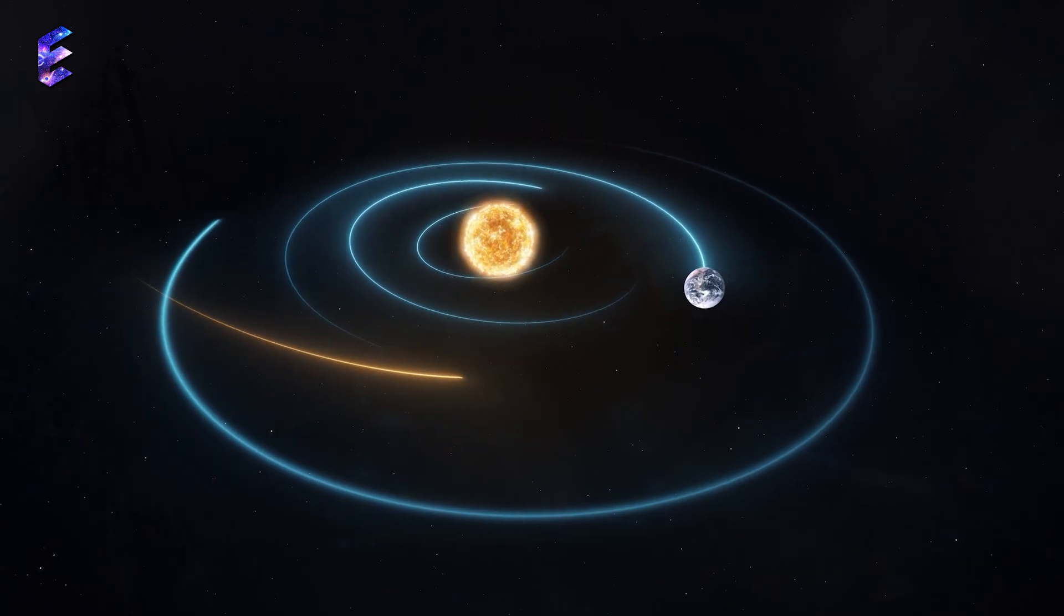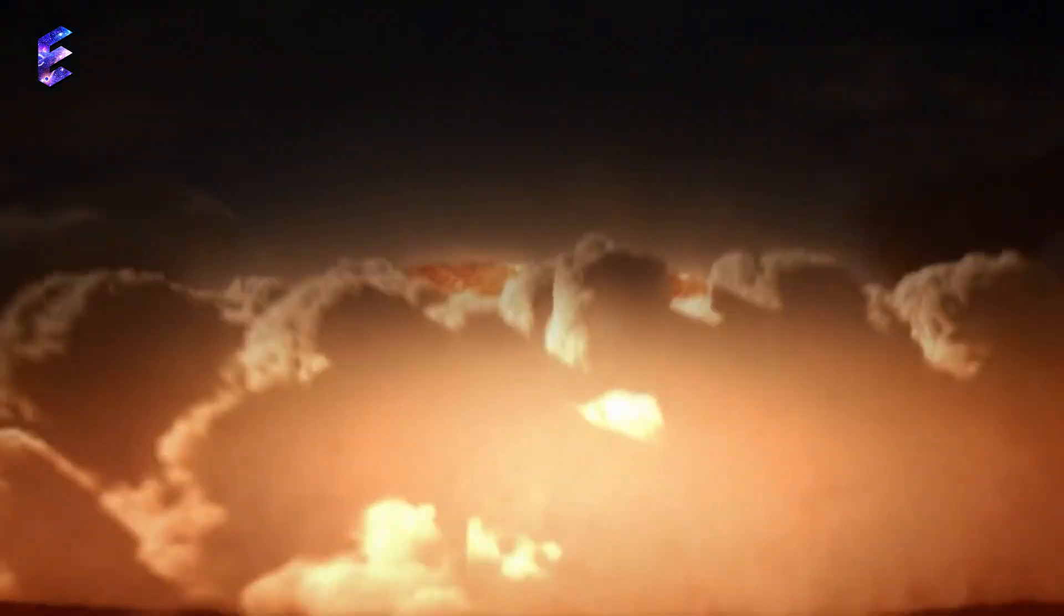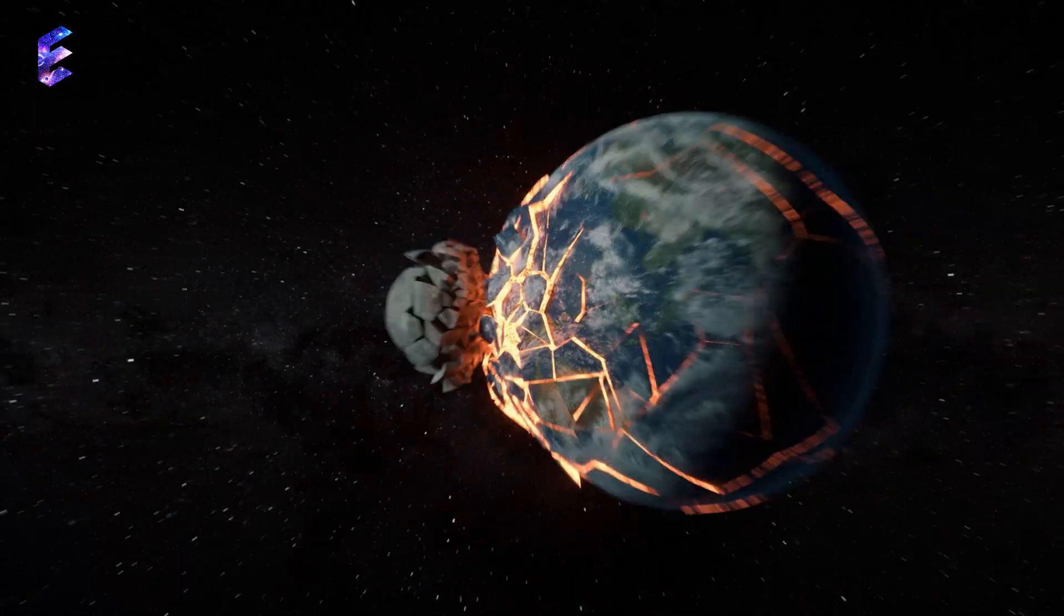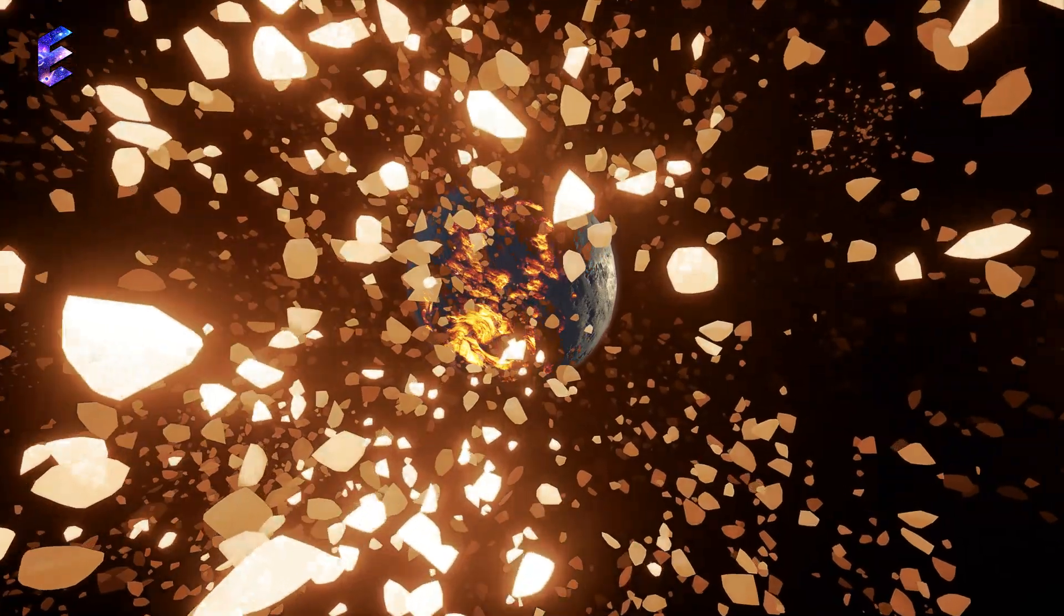What would happen if the asteroid Vesta, almost the size of a city, were to hit Earth? Let's delve into this hypothetical scenario. While the impact of Vesta wouldn't shift Earth's axis or its orbit, it will surely make its crust bleed.